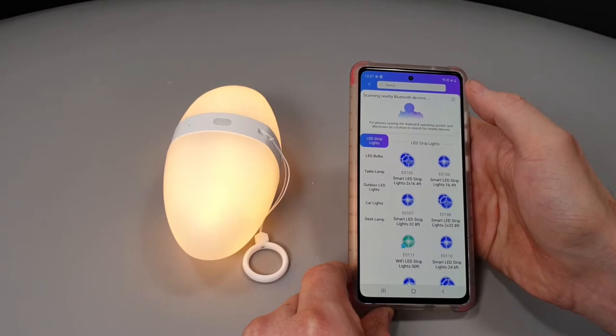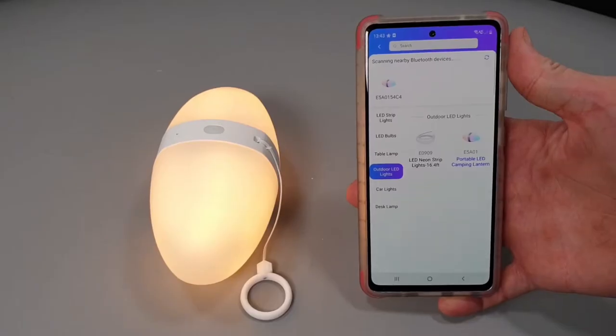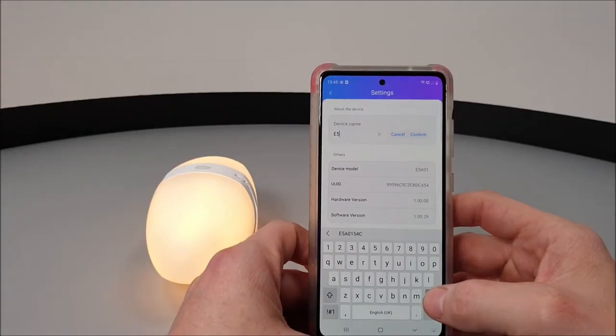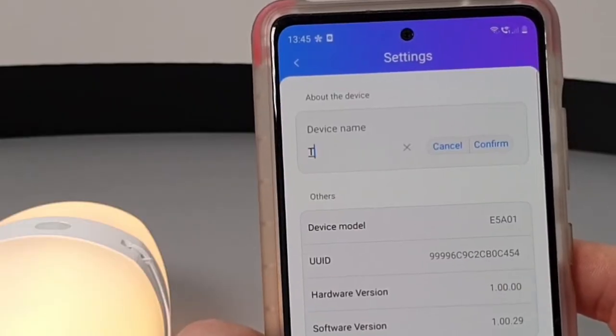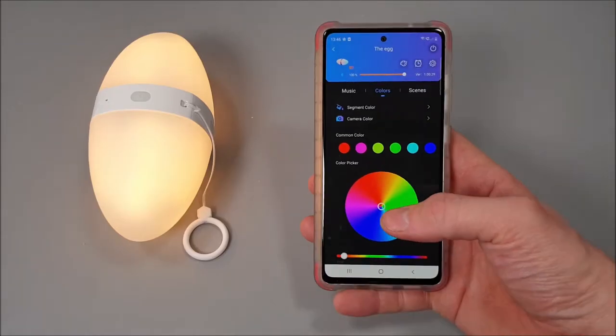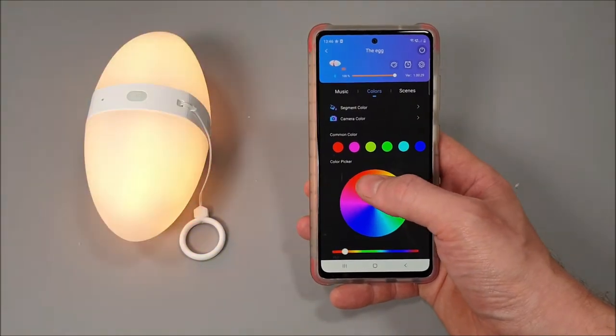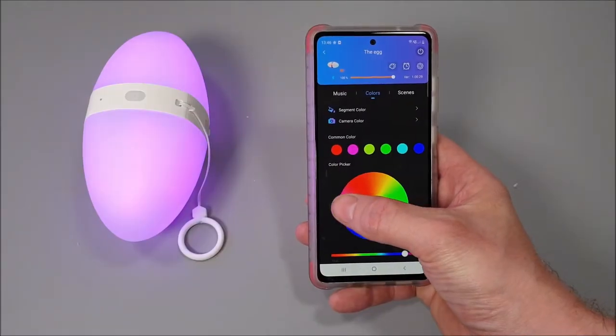Let's open the app up, select outdoor lights, and there it is: E5A01. We can go ahead and change that name, which we're simply going to call the egg, and we're ready to roll. Now we have access to literally millions of color choices.